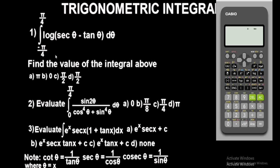Let's begin with Question 1. Question 1 is a definite integral, which is the type of integral that has a lower limit. To solve this, press the integral sign button. The upper limit is a fraction: pi over 4. To bring out pi, press Shift and the pi button, then over 4. The lower limit is also a fraction: negative pi over 4. Then come to the center and input the values — we have log... okay.